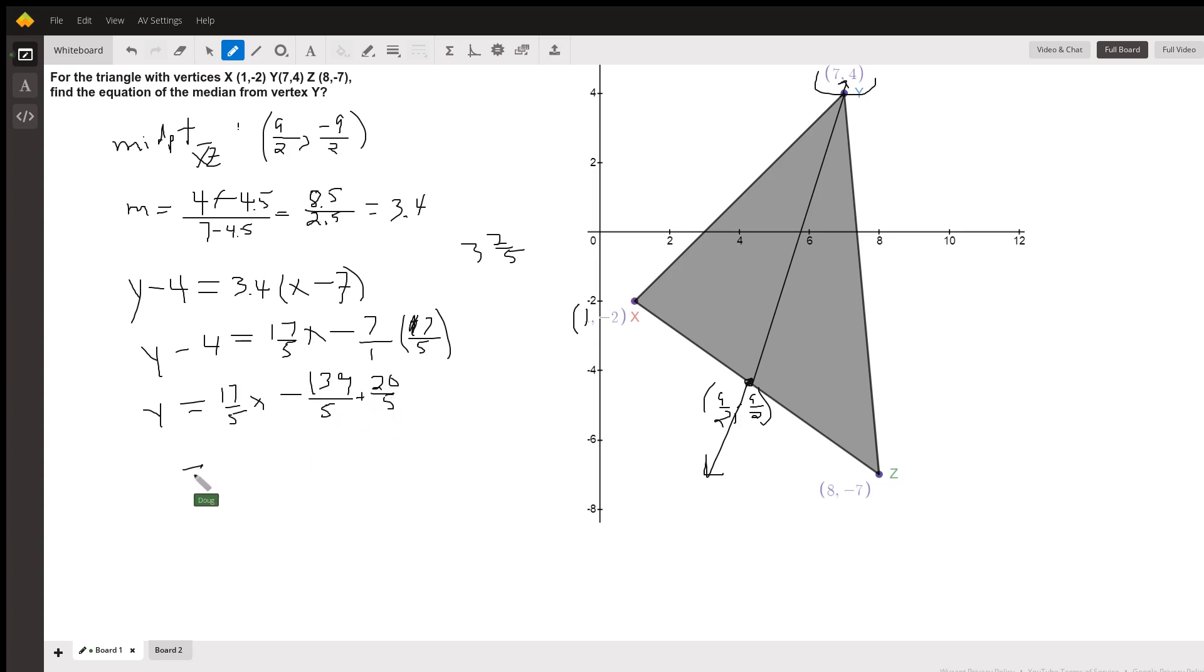So the slope intercept form is 17 fifths x minus 119 fifths. And that's, if we extended this all the way down here, we'd have the y intercept, which is almost 20, but not quite.